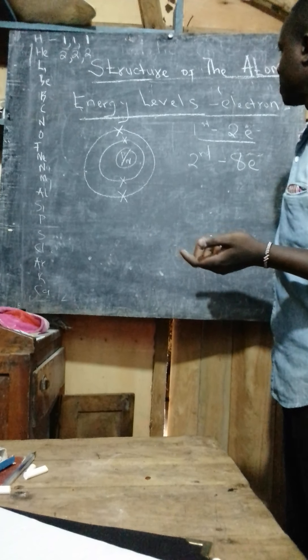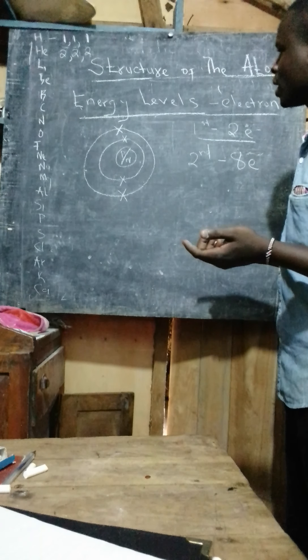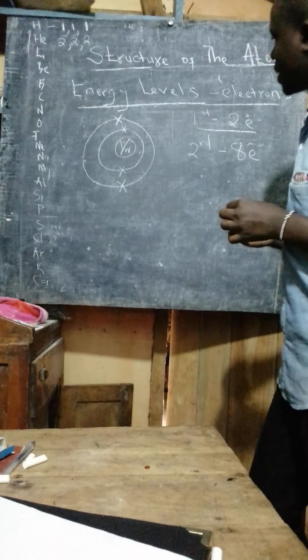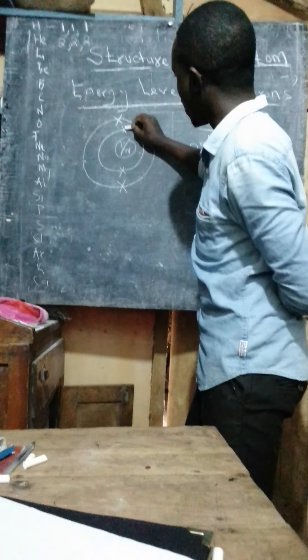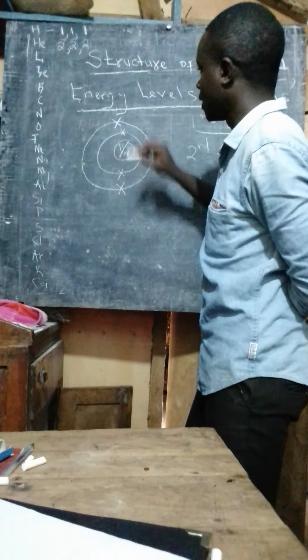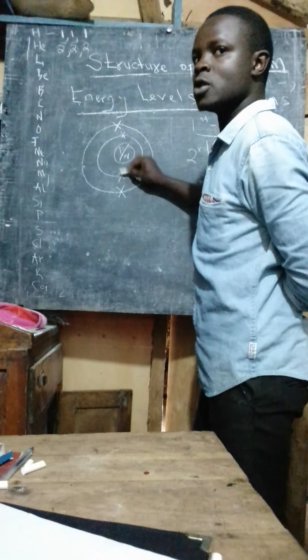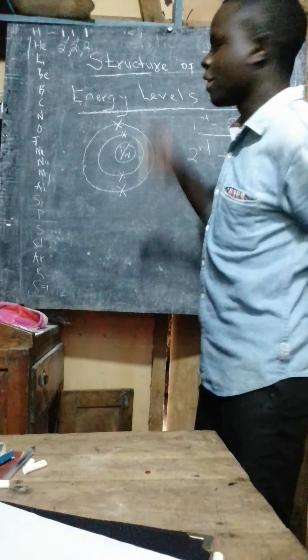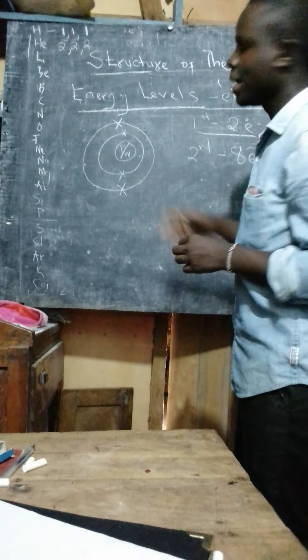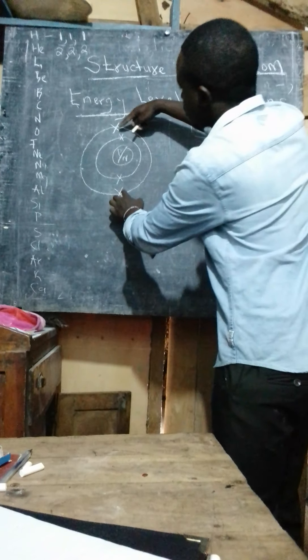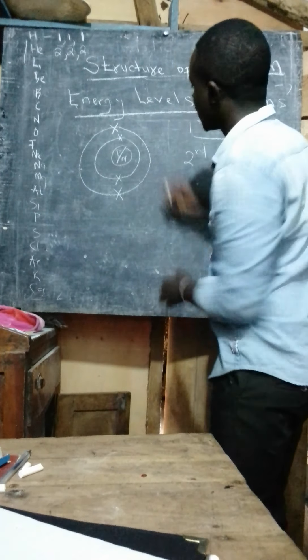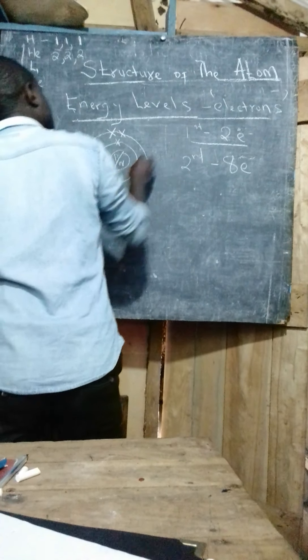Welcome. For this lesson, there is something very important that you should note on the energy levels in the structure of the atoms. What you realize is that we say that energy levels contain the electrons. This is where the electrons of the atoms are located — the electrons of the atoms are located on the energy levels.